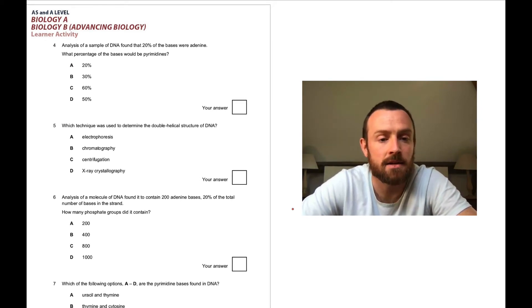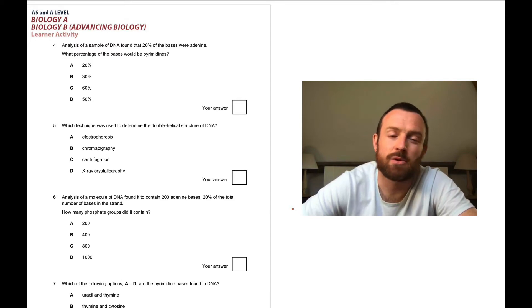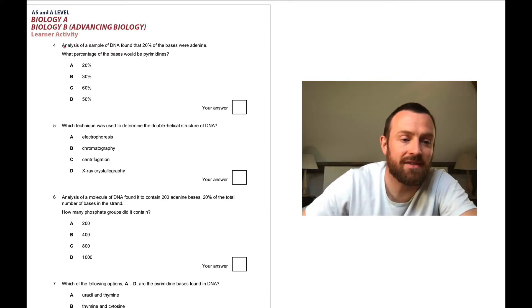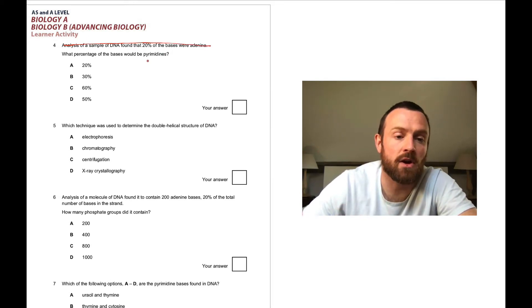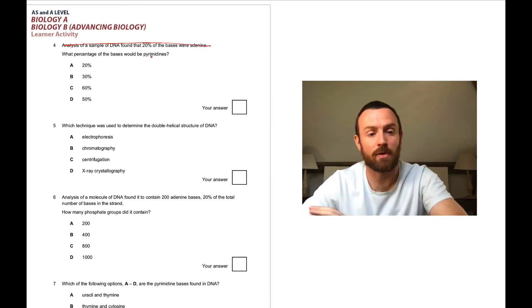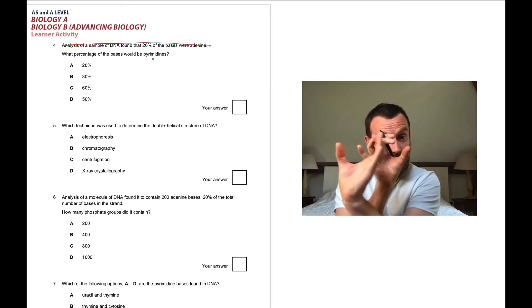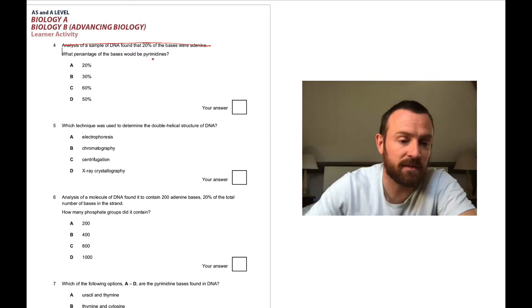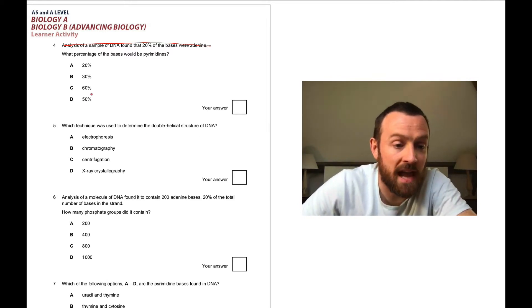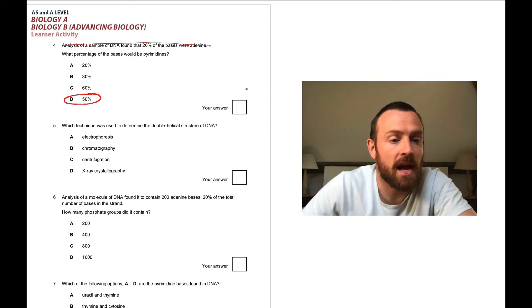For analysis of a sample that found 20% of the bases were adenine, what percentage of the base would be pyrimidines? This is almost a trick question because you don't even need this information, because in all DNA we know that pyrimidines pair with purines. It must be the double ring paired with the one ring on each rung, so it must be 50%. DNA, if it's double stranded, always has 50% purines and 50% pyrimidines.